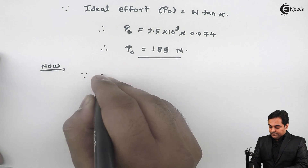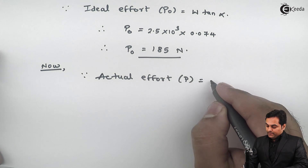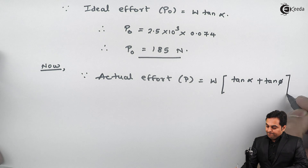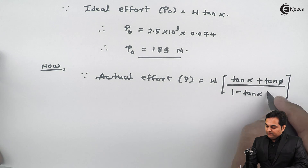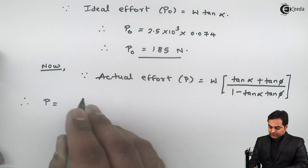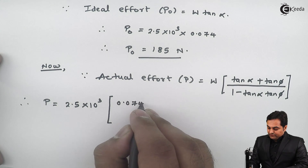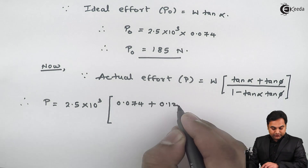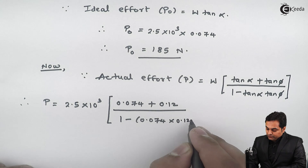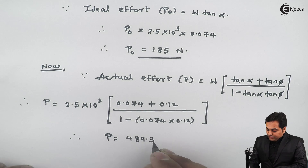The actual effort P is given by the formula: P = W × (tan(alpha) + tan(phi)) / (1 − tan(alpha) × tan(phi)). Therefore, P = 2500 × (0.074 + 0.12) / (1 − 0.074 × 0.12), which gives the actual effort P = 489.35 Newton.